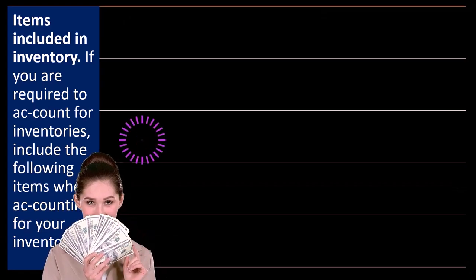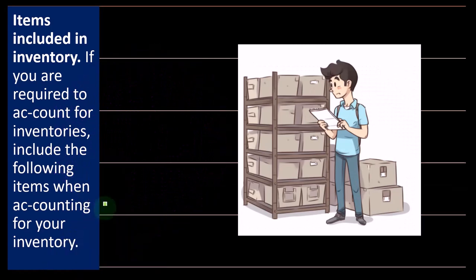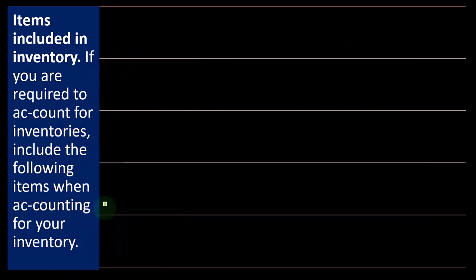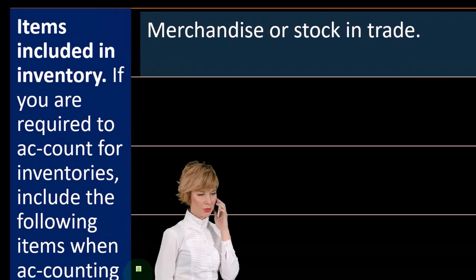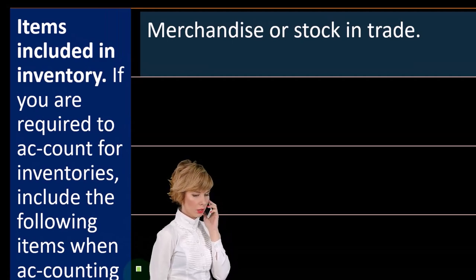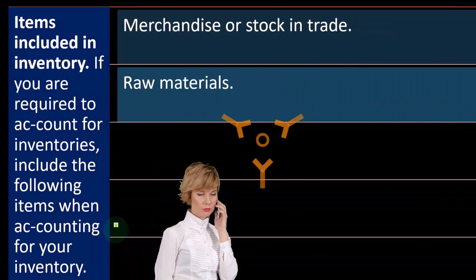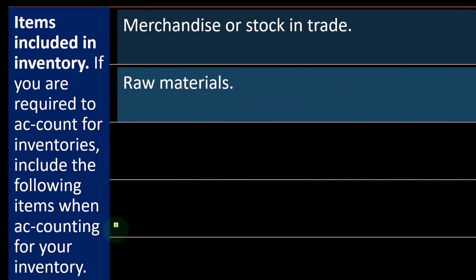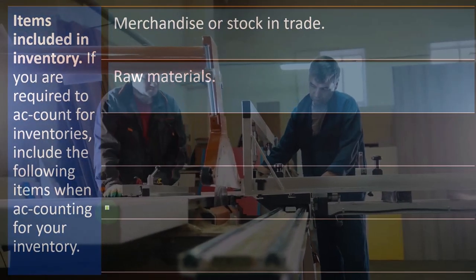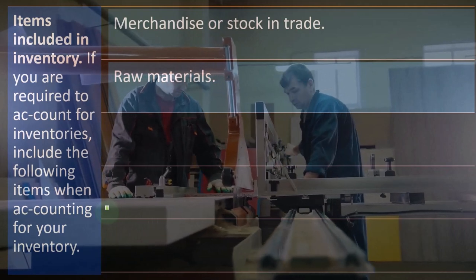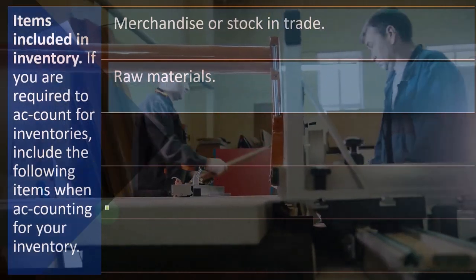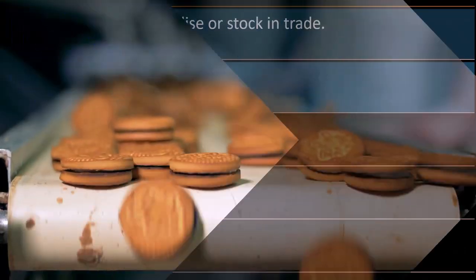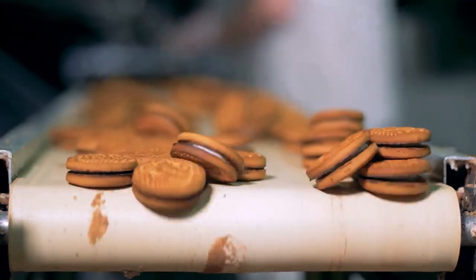Items included in inventory. If you are required to account for inventories, include the following items: merchandiser's stock and trade — if you buy stuff, mark it up, and sell it, the stuff you're buying and planning to sell is inventory. Then there are raw materials, for the situation where you're making things using a job cost system or a process cost system. You'll buy raw materials, start to work on them as work in process, and then have finished goods that combine the raw materials with your overhead and labor.